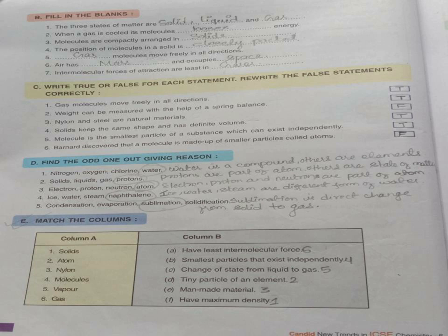Number 3, electron, proton, neutron, atom. Atom is odd because electron, proton and neutron are the small parts of atom. Number 4, ice, water, steam, naphthalene. Ice, water and steam are different states of water. Naphthalene is a sublimable compound. That is why it is odd.